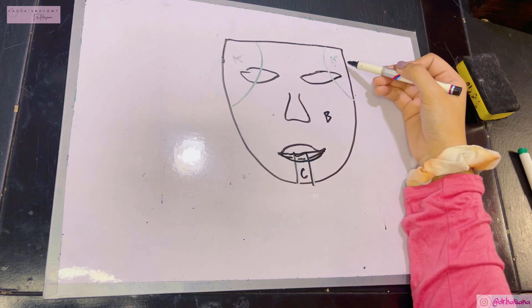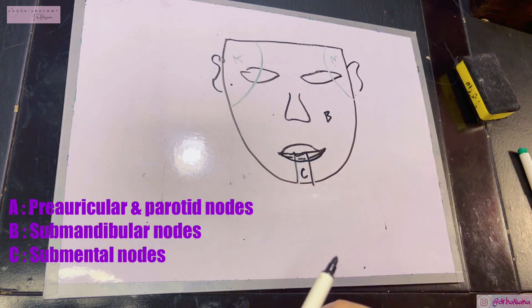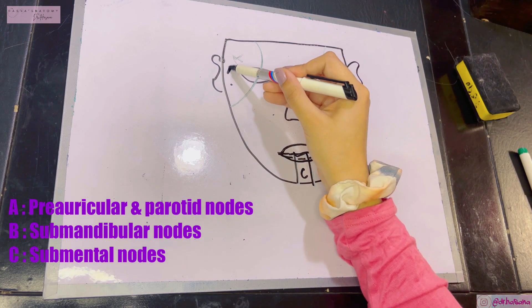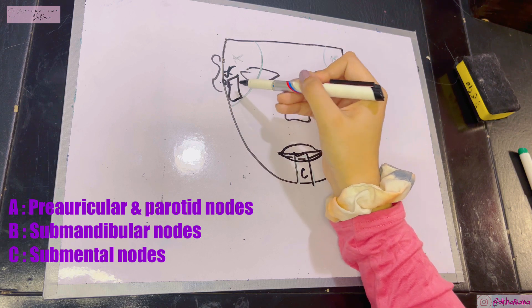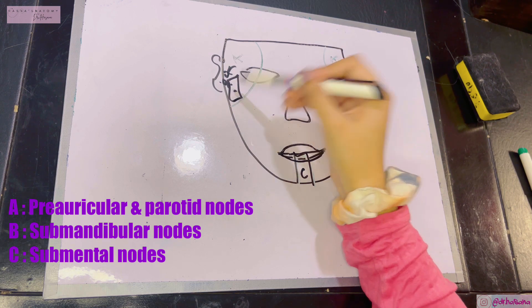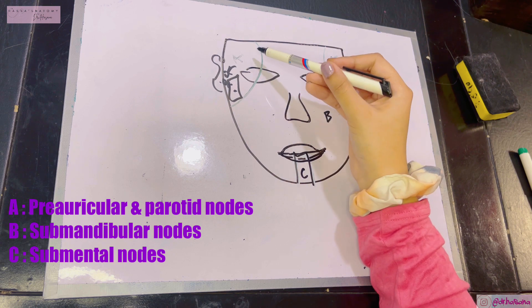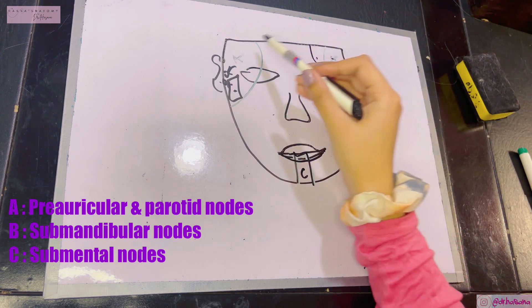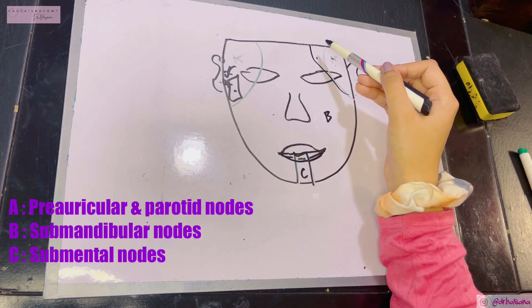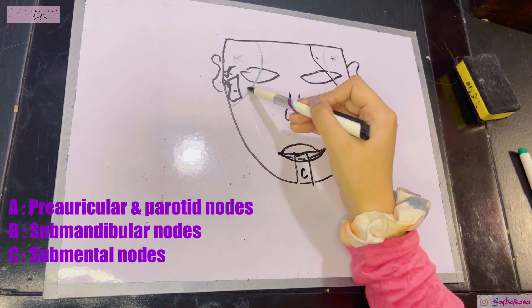The upper territory A is where the ears lie, and near the ears are the pre-auricular lymph nodes and the parotid gland, so this territory drains into the parotid lymph nodes. This upper territory includes most of the forehead, the lateral half of the eyelids, the conjunctiva, and part of the cheek.